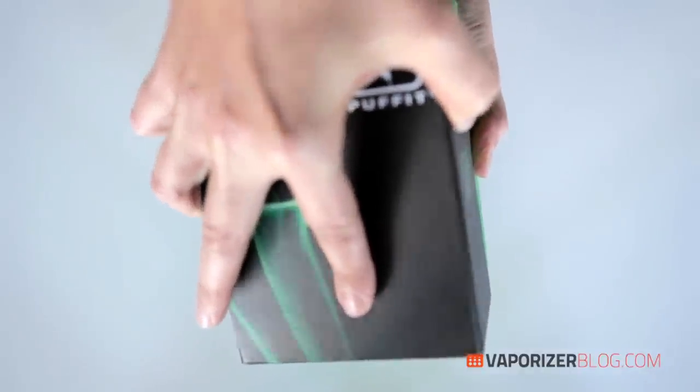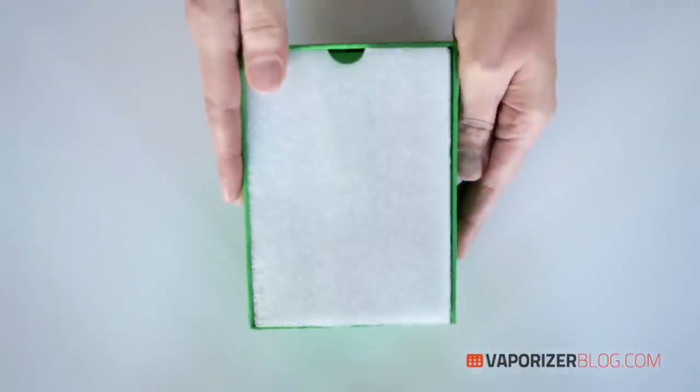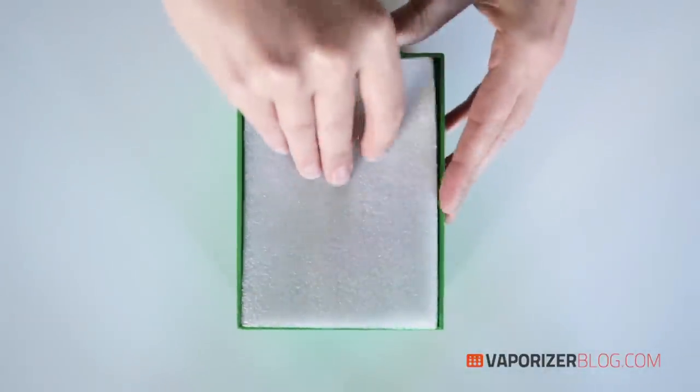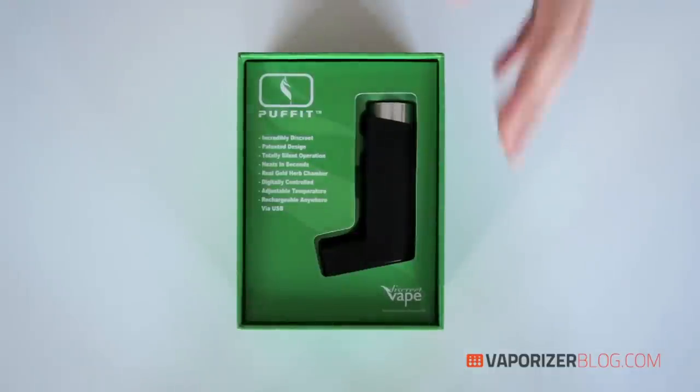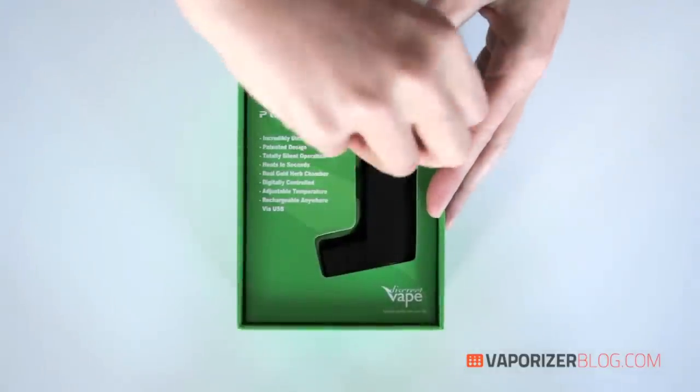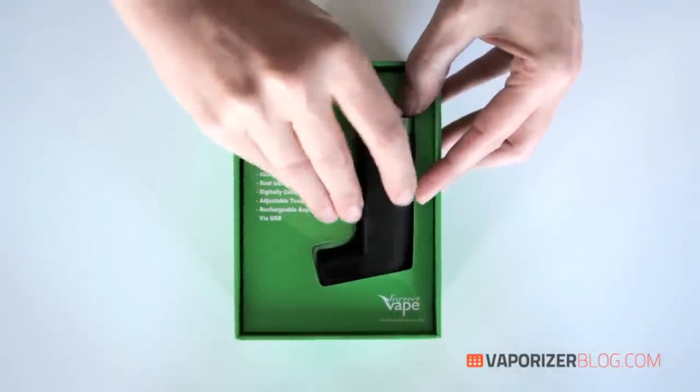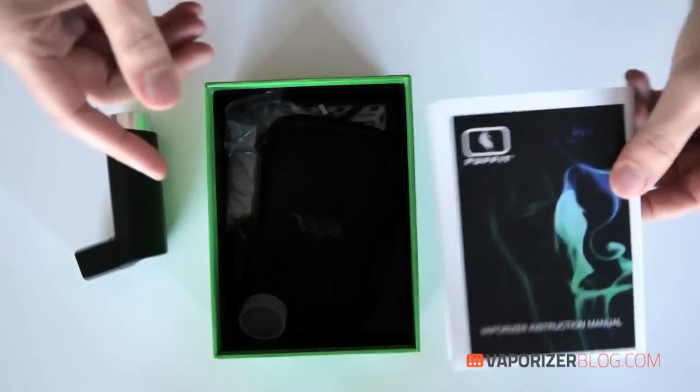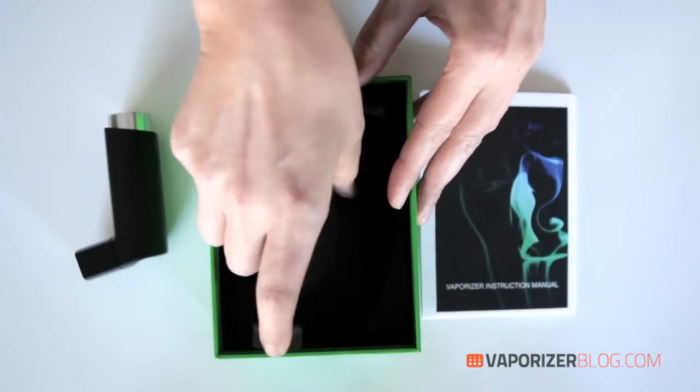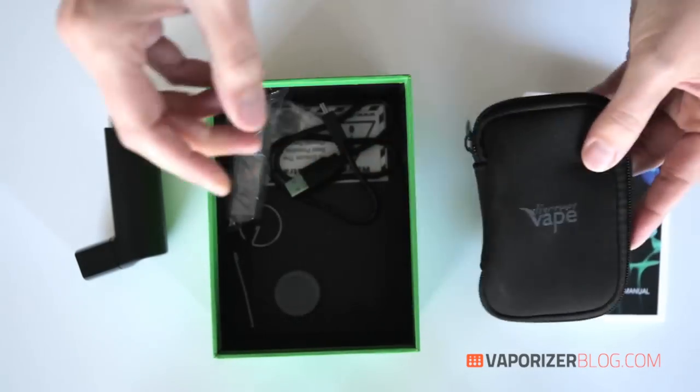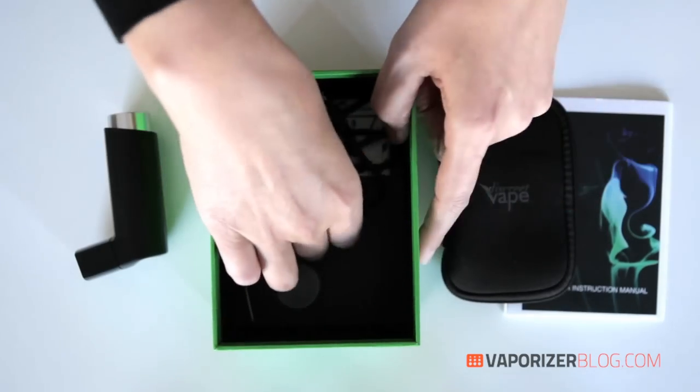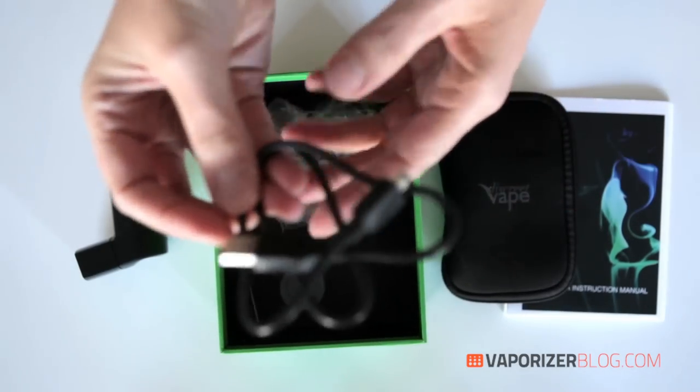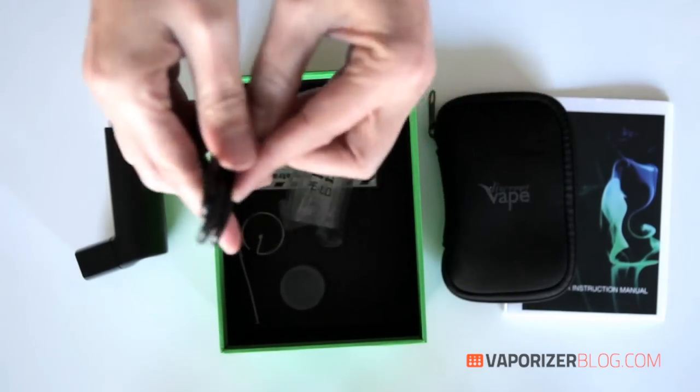Okay, so let's open up the box and see what we have inside. Here we have the unit itself that indeed looks like an inhaler. The instruction manual, we'll put that over here. We have one neoprene carrying case. We have a USB charger which is always a nice feature.